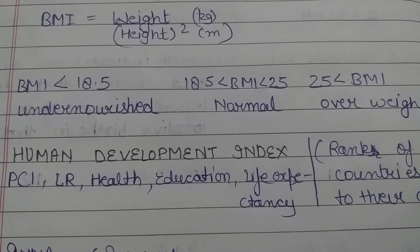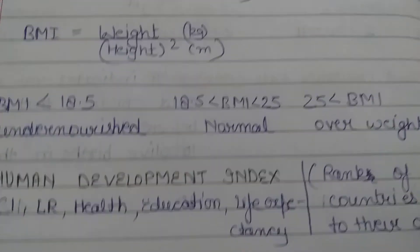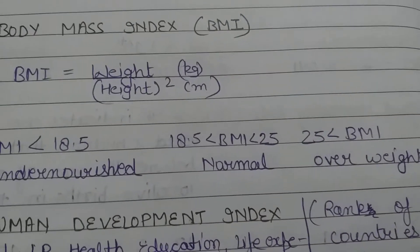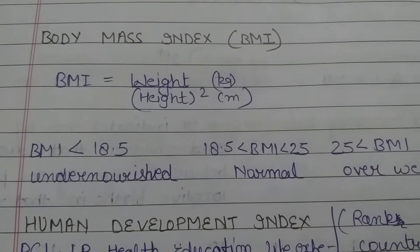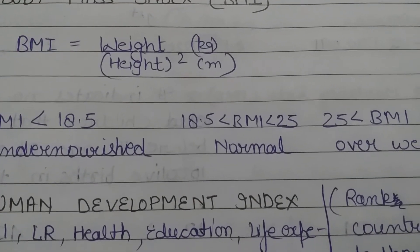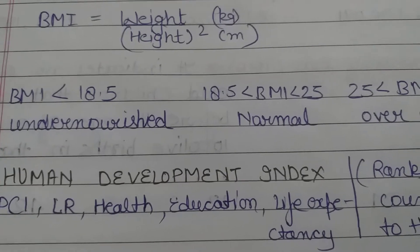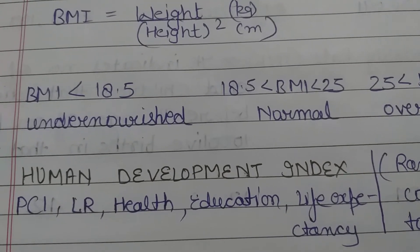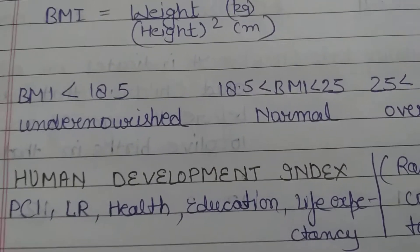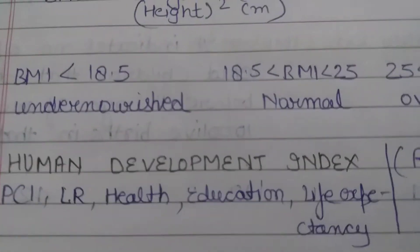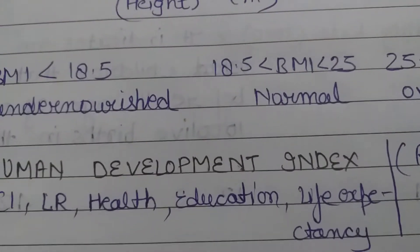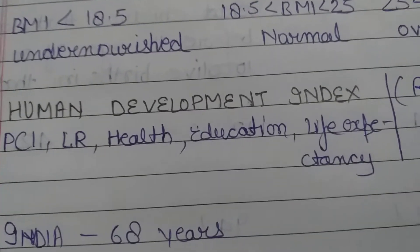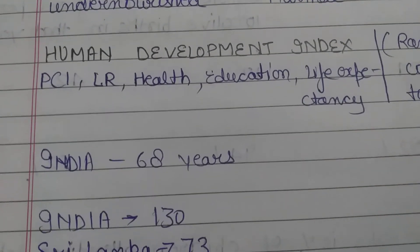Next is Human Development Index (HDI). Countries are given ranks according to their development. It mainly considers health, education, literacy rate, per capita income, and life expectancy. Life expectancy is the average number of years that a newborn could expect to live — we assume that a newborn baby will live for a certain number of years. India's life expectancy is 68 years, and India's rank is 130.